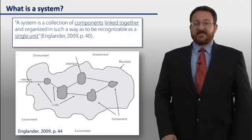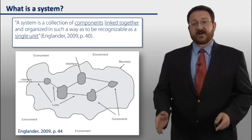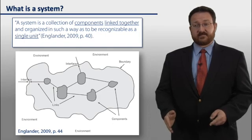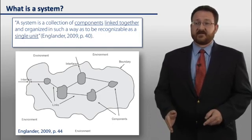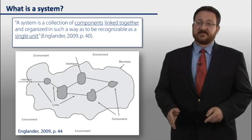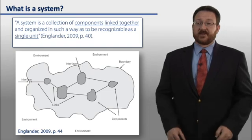For example, this is a system. We see the elements of a system here, such as the environment that surrounds the system. We also see the boundary that separates the system from the environment. We see the components of the system, and we see the links that exist between the various components.